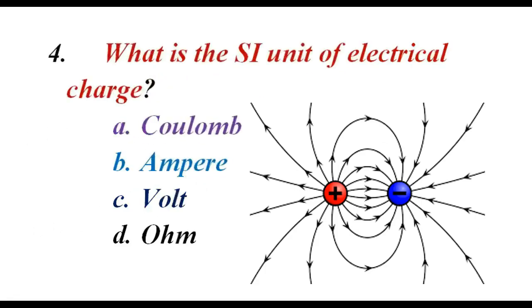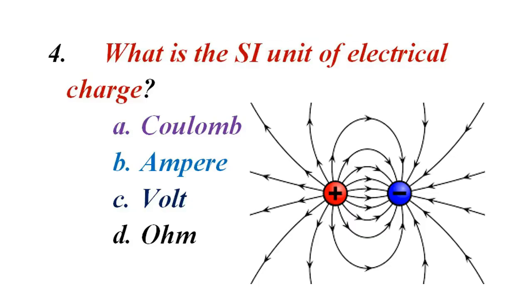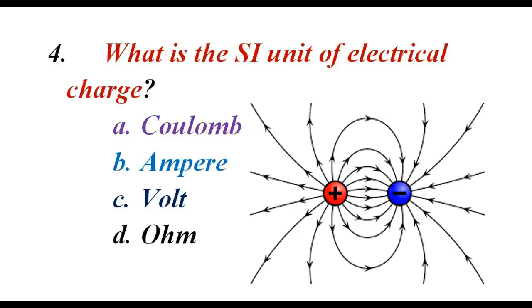What is the SI unit of electrical charge? A. Coulomb. B. Ampere. C. Volt. D. Ohm. The correct answer is A. Coulomb.